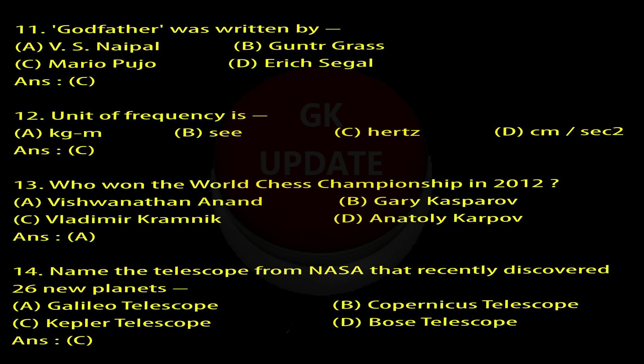Question 13: Who won the World Chess Championship in 2012? A. Viswanathan Anand, B. Gary Kasparov, C. Vladimir Kramnik, D. Anatoly Karpov. Answer: A.